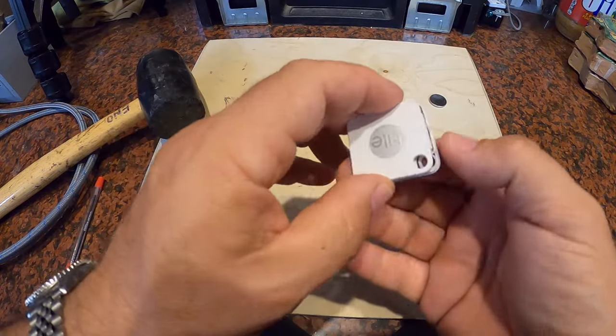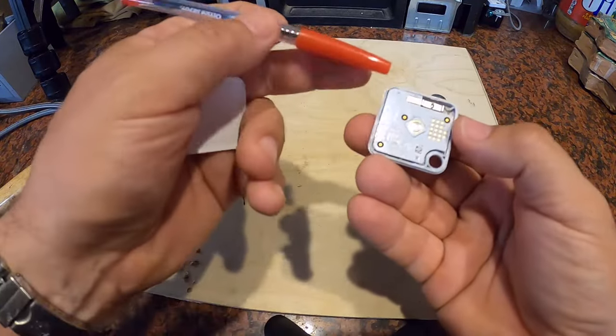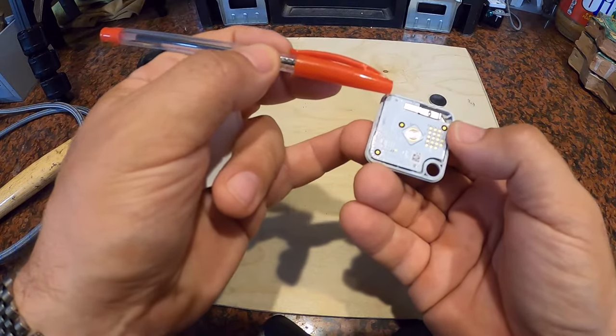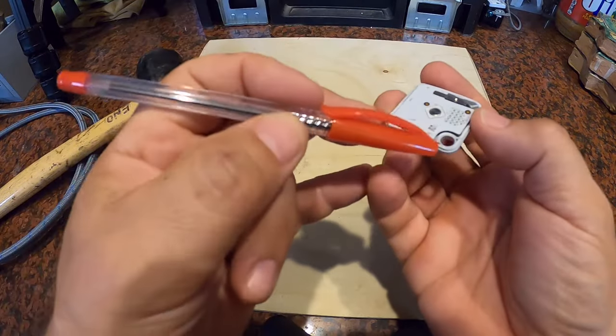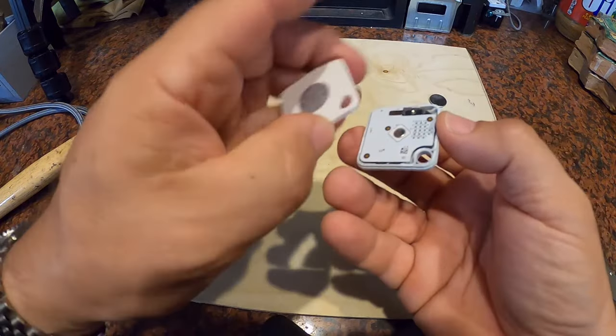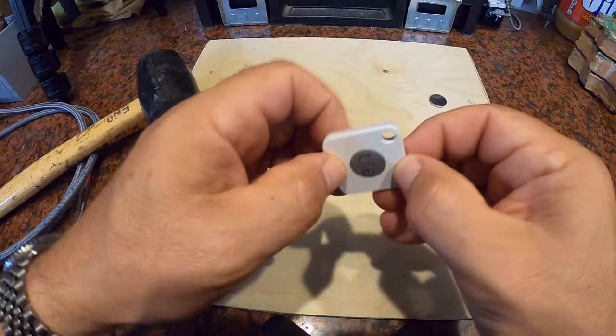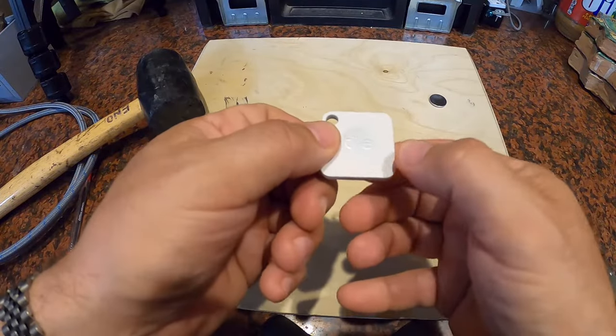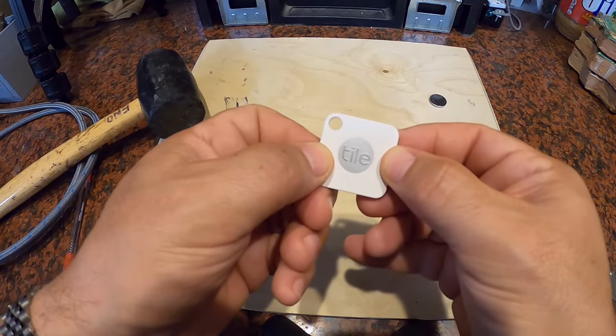Now all I got to do is take a little bit of super glue and just put a small little dab on each corner here, here, here, and around here where the keychain holder is. And that's it. You just glue this back down in on. And lo and behold, you've got your tile working again.